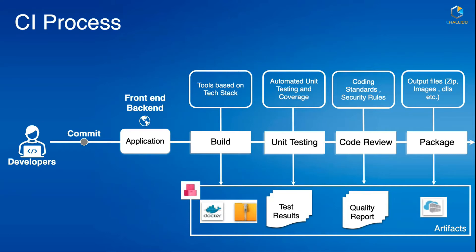Once the build is successful, it will run all the unit test cases that were developed and generate a report of the number of failed and passed test cases, including what is known as code coverage. Code coverage tells you, out of 100 lines of code, how many lines are actually tested by your unit tests. If unit tests execute 80 out of 100 lines, the coverage is 80 percent. So it generates reports on the pass-fail ratio and a unit test coverage report.